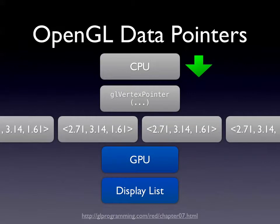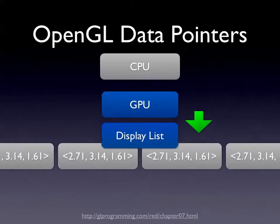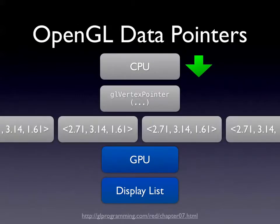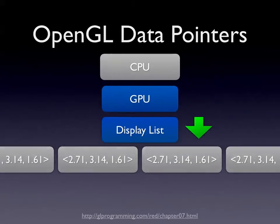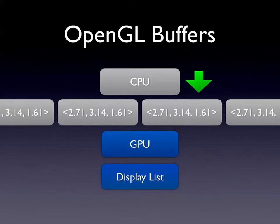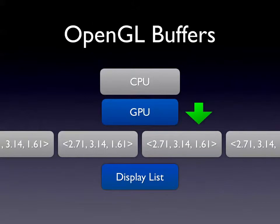Another optimization is GL vertex pointer, which actually works with an array of data on the CPU rather than having individual C calls — so it's not actually using a display list. And then GL buffer data is a similar concept where it has all of this data, transfers it to the GPU, and then instead of transferring all that data every frame, it actually keeps it on the GPU and allows you to reference it and transfer it into the GPU's display list with just one C call and no transfer of data.